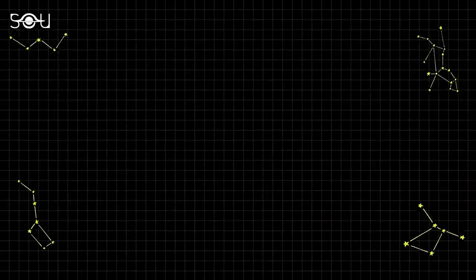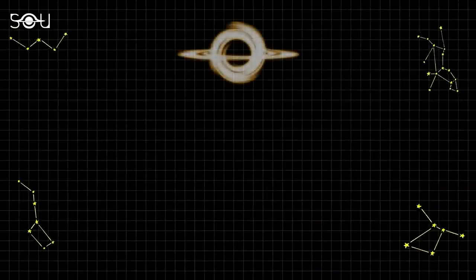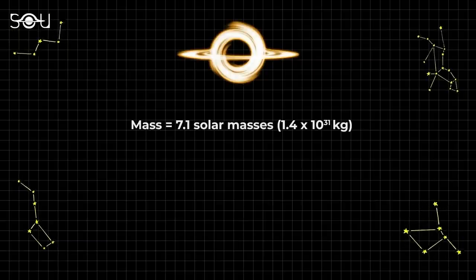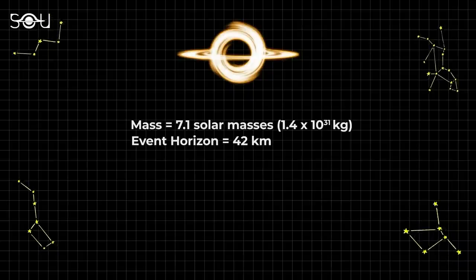The team also took measurements of this rogue black hole. They found that the black hole has a mass of 7.1 times that of the Sun. Hence, its event horizon, or the point of no return, is just 42 kilometers across. This black hole lies in our galactic neighborhood, 5,000 light-years away.